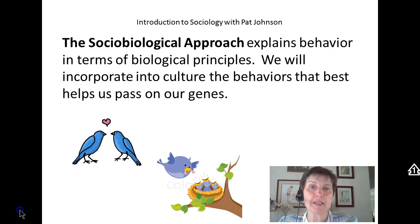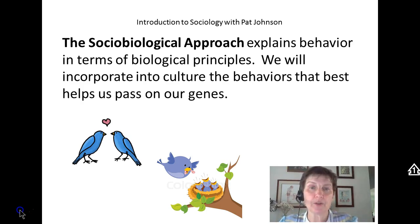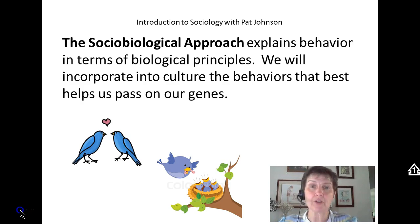In other words, one bird needs to incubate the eggs while the other feeds the one who's laying on the eggs. Then when the baby birds are hatched, one needs to feed the baby birds while the other protects, or they tag team where they both feed the baby birds. The two parent birds have to work together to keep those baby birds alive. And this promotes monogamy among birds.